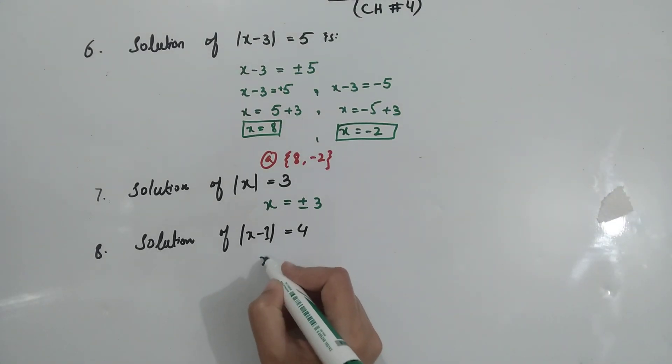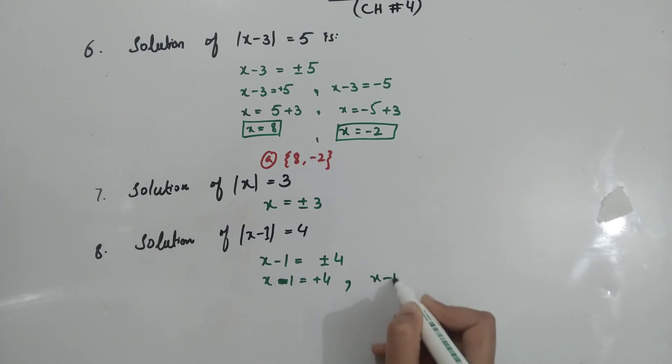Again we have to take care of this sign. x-1 equal to plus 4, and on the other side x-1 equal to minus 4. We have to take care of this sign change. x equal to, minus 1 second place, 4 plus 1, x equal to 5.